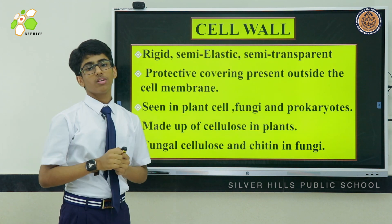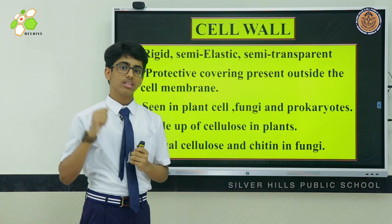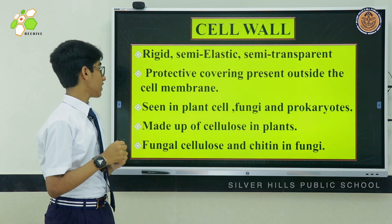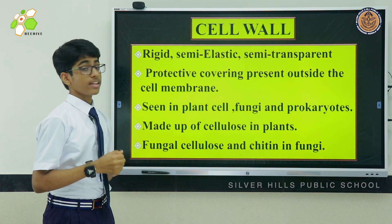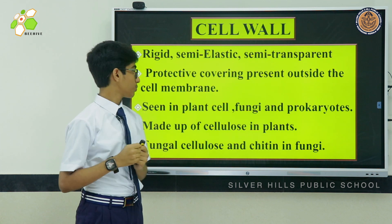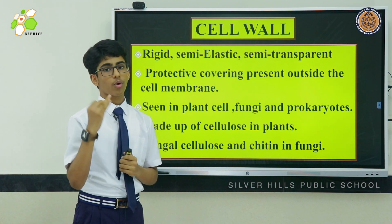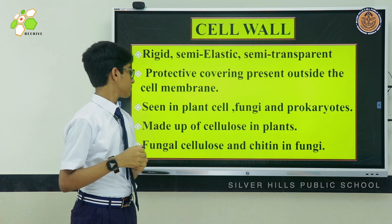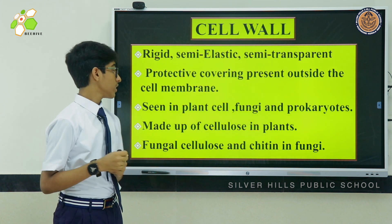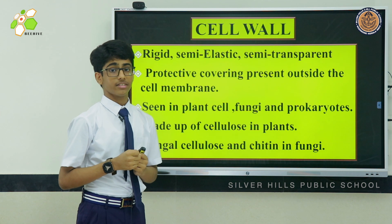Cell wall. As the name represents, it is a wall around the cell and is the outermost covering. It is rigid, semi-elastic, and semi-transparent. It is seen in plant cells, fungi, and prokaryotes. In plant cells, it is made up of cellulose. In fungi, it is made up of fungal cellulose and chitin.